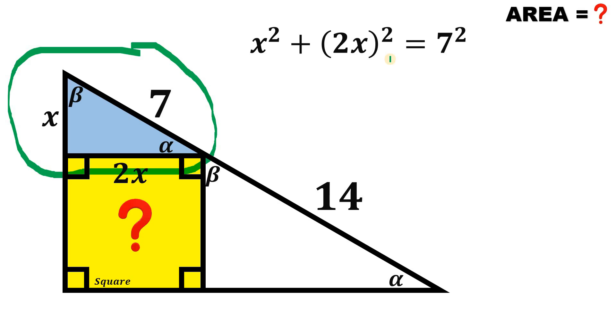Now simplify. 2x raised to the power of 2 will give us 4x squared. If we combine x squared and 4x squared, we have 5x squared. Now divide both sides by 5. We get that x squared equals 49 over 5.